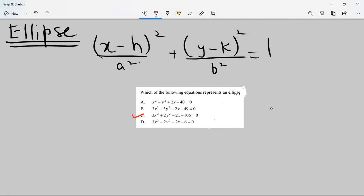It's representing the ellipse. Otherwise, all the other options a, b, and d represent the hyperbola. The main difference between the ellipse and the hyperbola is the sign.